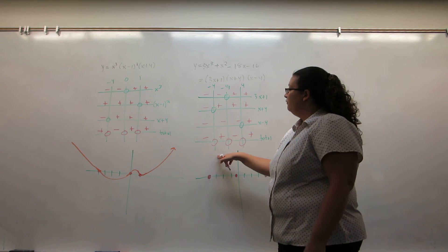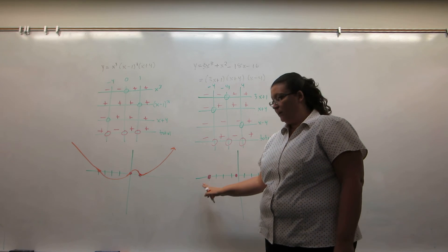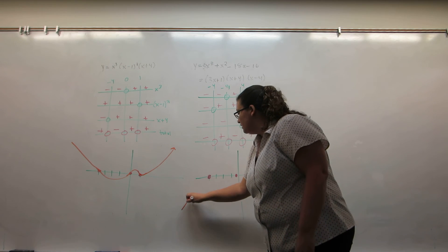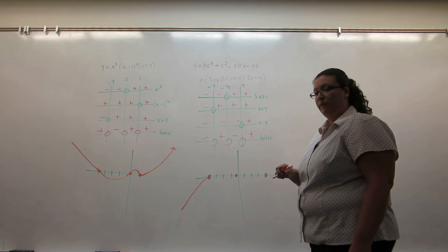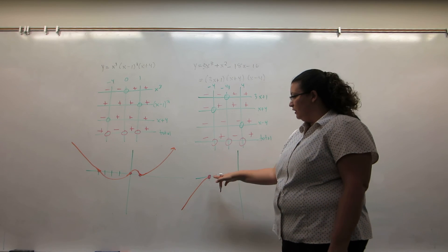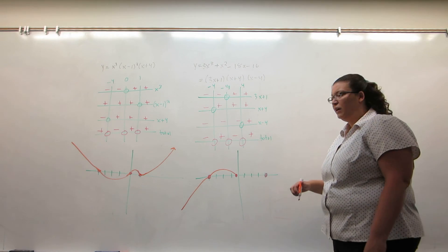So before negative four, the graph is negative. I know it has to end at that intercept, so it's either going to look like this or look like that. And the one that's negative the whole time is this one. Between negative four and negative a third, the graph is positive. I have a starting and an ending point, so I connect them in a positive manner.